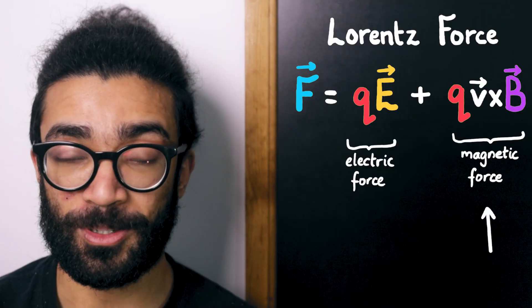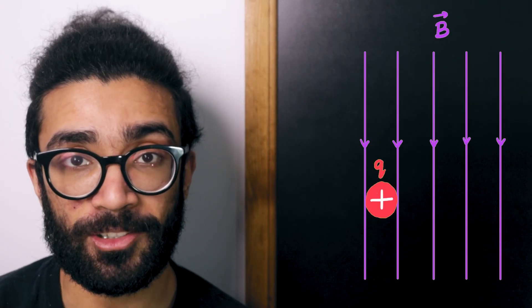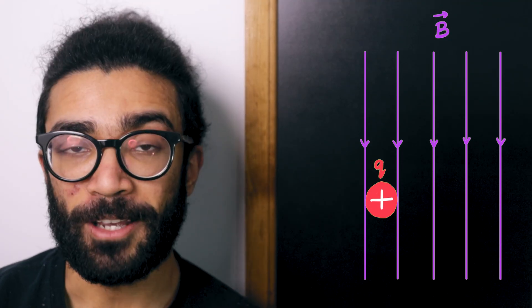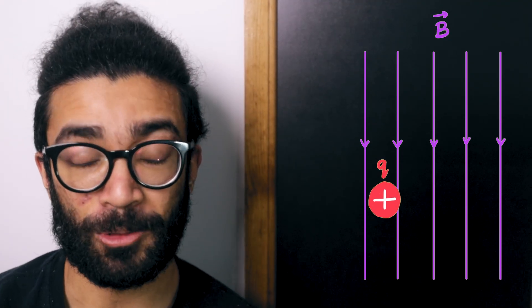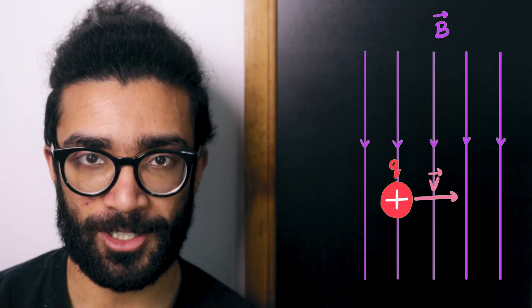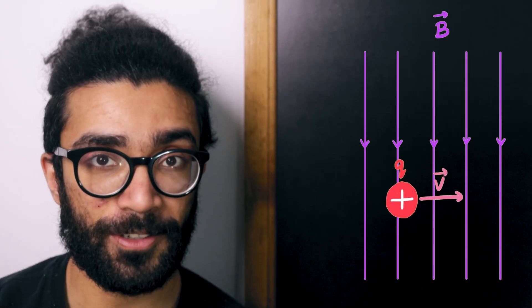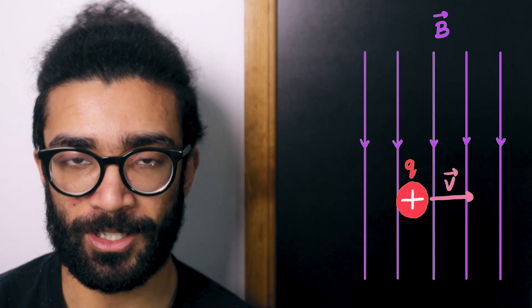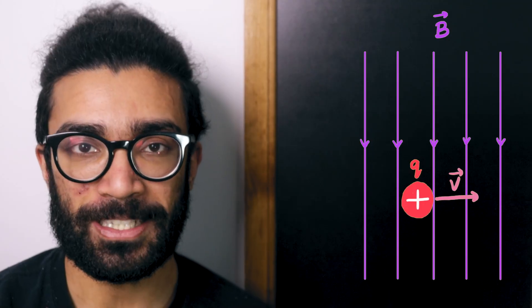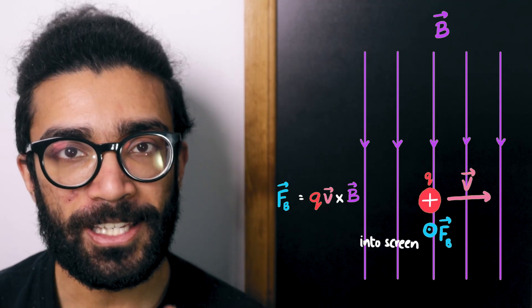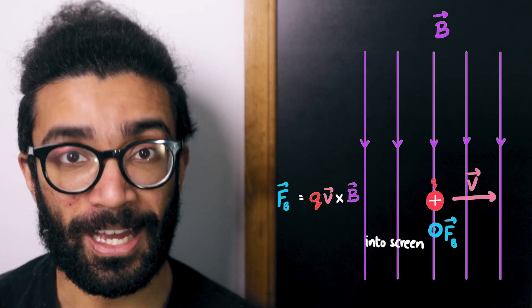Now let's think about the magnetic force, which is slightly trickier. It turns out that if a charged particle is placed in a magnetic field and that charged particle is stationary relative to the magnetic field, then the magnetic field doesn't actually exert a force on the particle. However, if the charged particle is moving relative to that magnetic field, then it can experience a force. This is where our vector V comes into play — it represents the velocity of our charged particle. It's a vector because velocity itself is a vector: it has magnitude, which is the speed of the particle, and it also has direction. The magnetic field exerts a force on our charged particle equal to Q multiplied by V cross B.